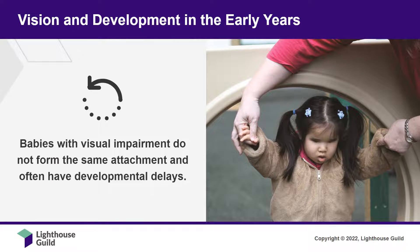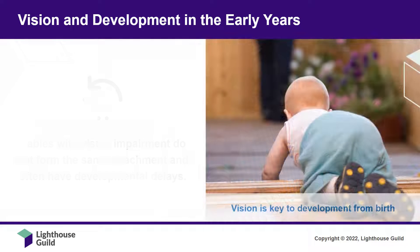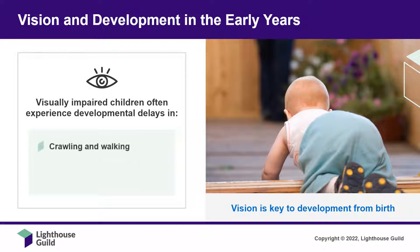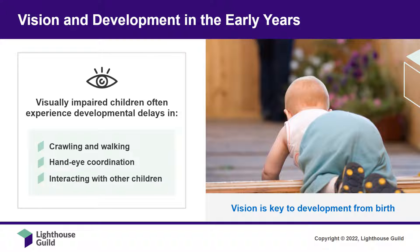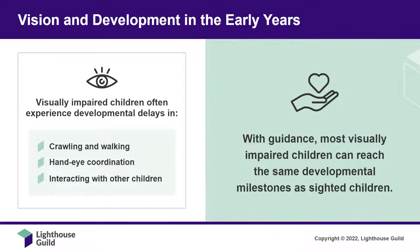Many babies with visual impairment do not form the same type of early attachment with their parent or caregiver. They aren't able to learn by mimicking behaviors, and don't have the visual incentive to reach for objects around them. This often causes delays in crawling and walking, in development of hand-eye coordination, and in how children interact with others. The good news is that, with guidance, most children can reach the same developmental milestones as sighted children. It just takes a little longer.